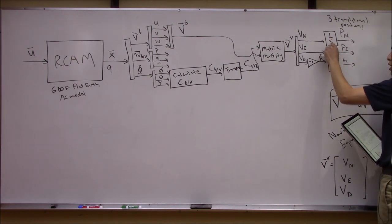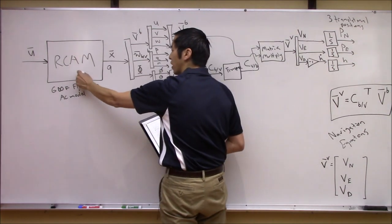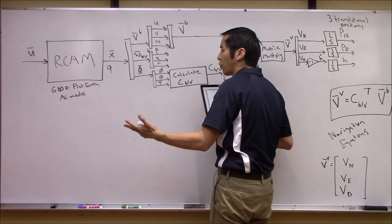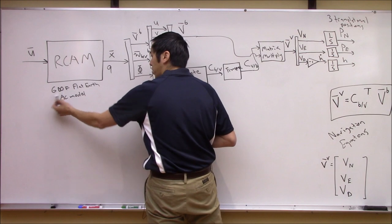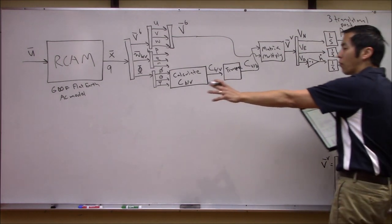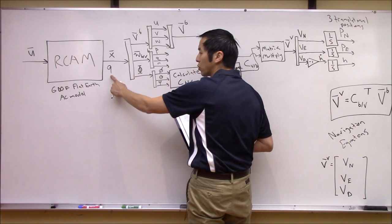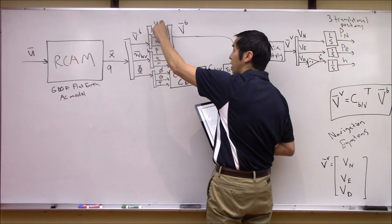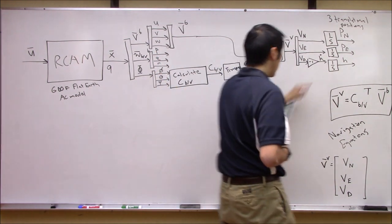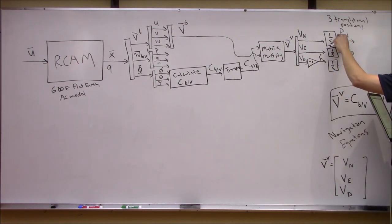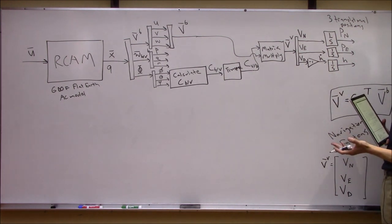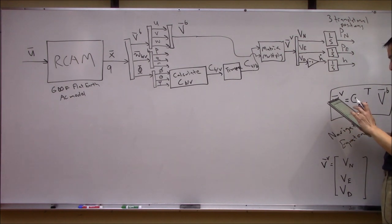There were already nine integrators to keep track of the nine states, and now nine plus three equals 12, which makes sense for a six degree of freedom system where we expect 12 states. One important note: over on the original side you specify nine initial conditions for the initial velocities, rates, and Euler angles. For the three new integrators you need to specify the initial position north, position east, and initial altitude to get the simulation going.